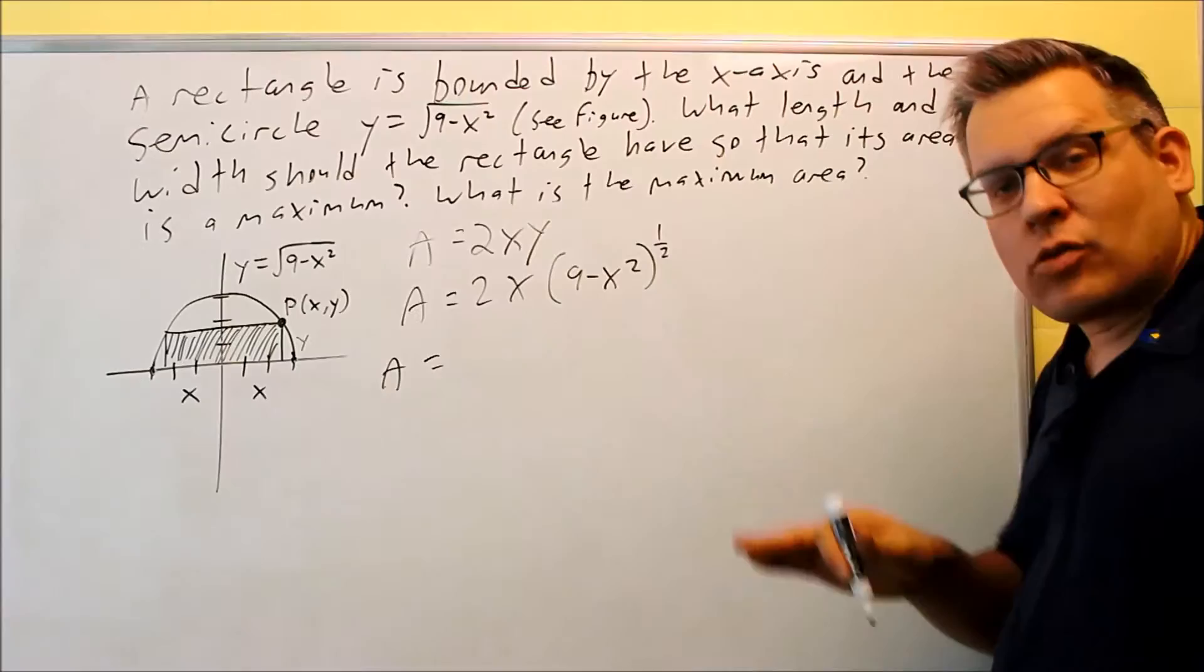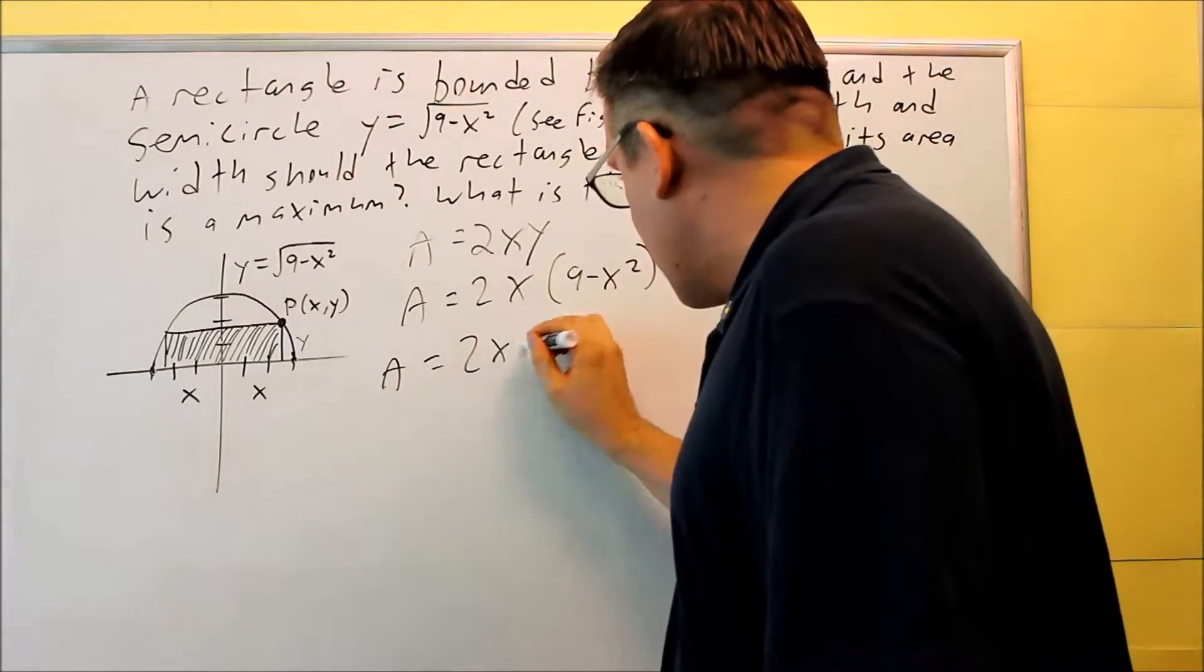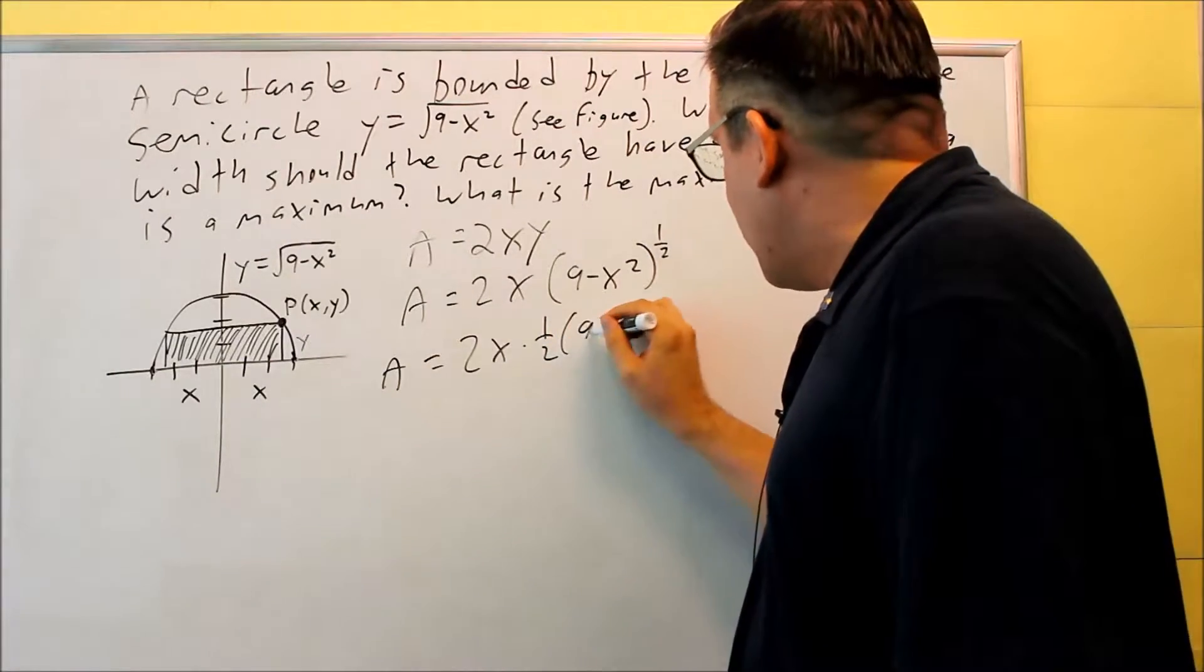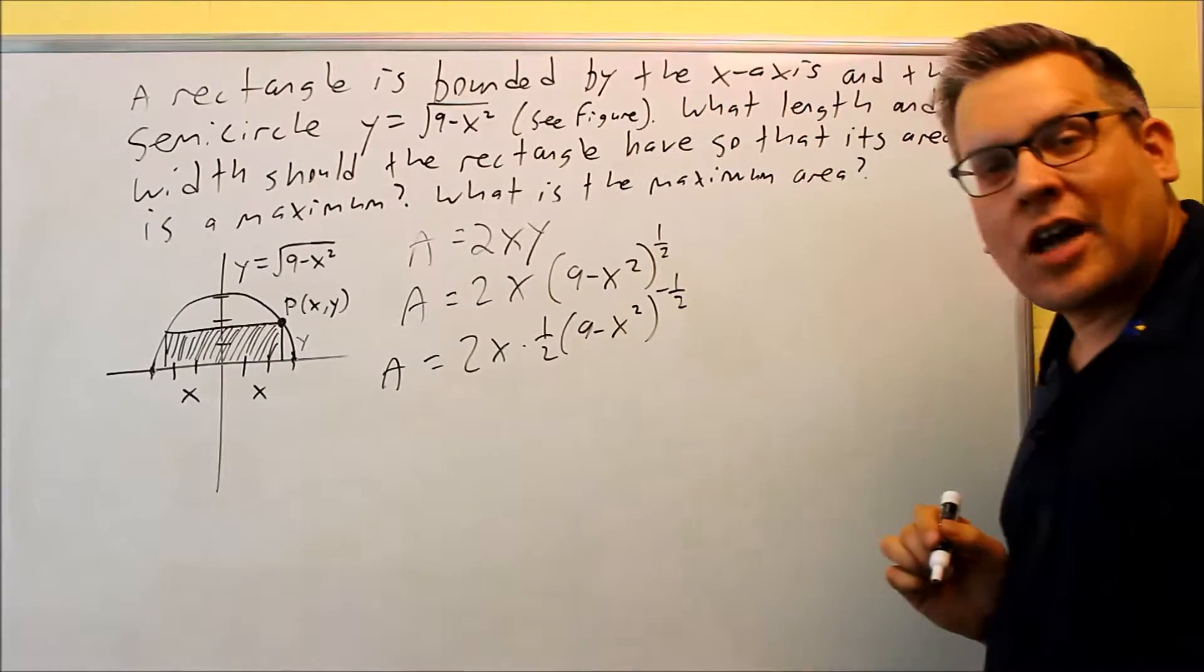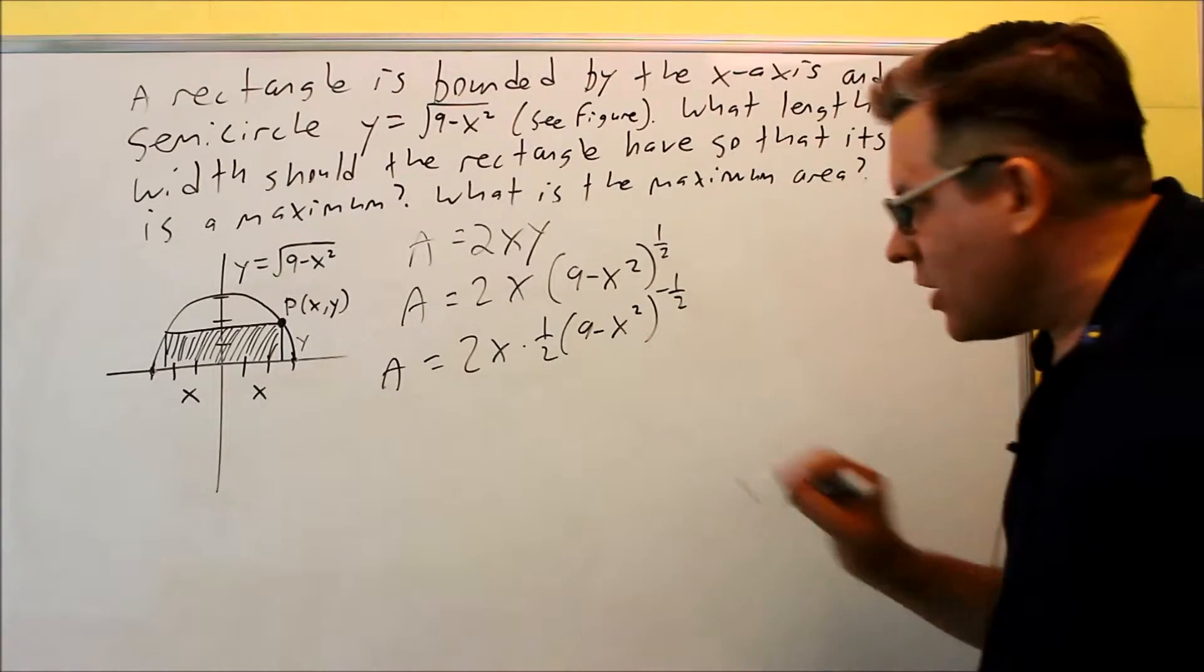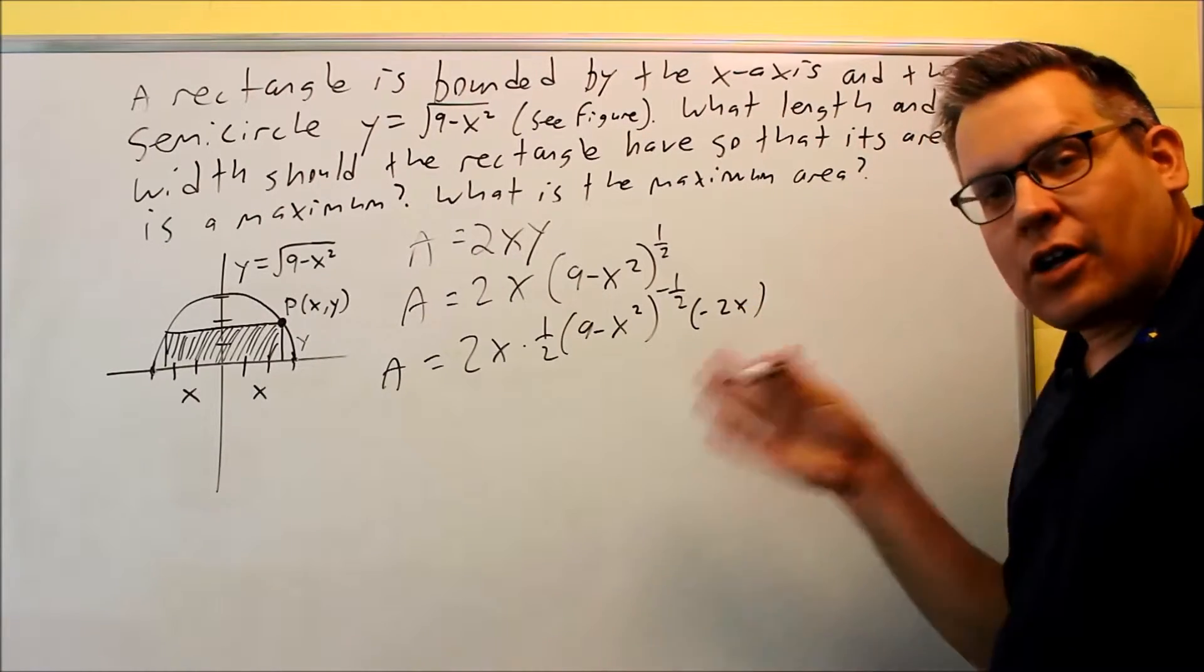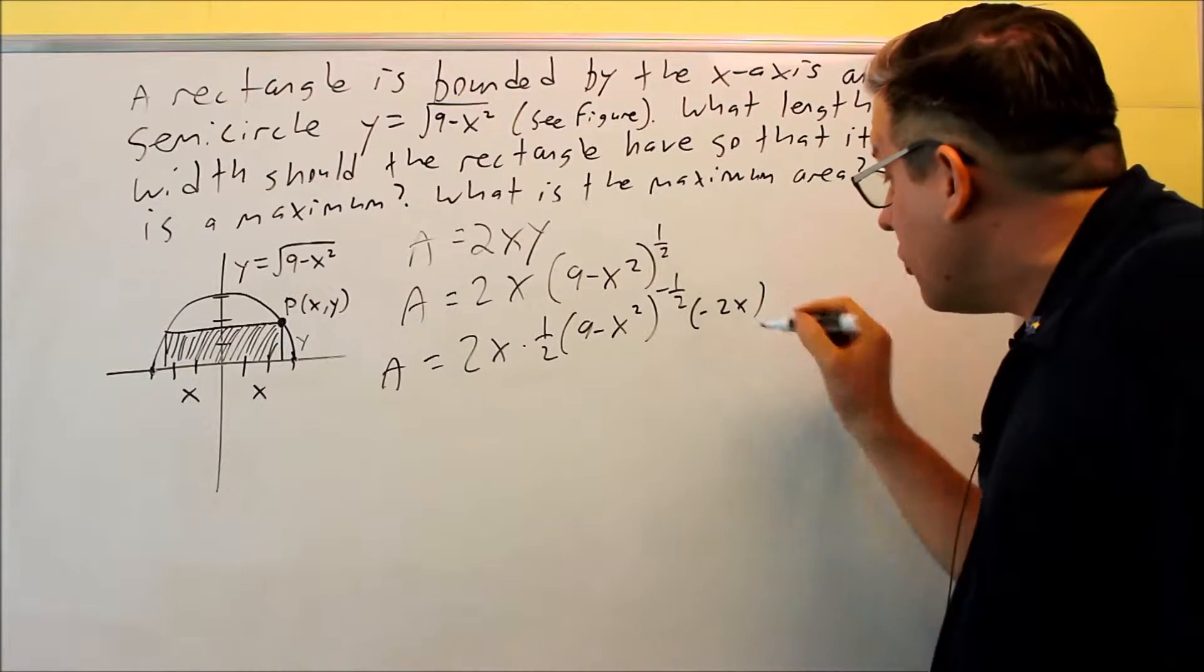Now this requires me to do a product rule combined with a chain rule. I have the first piece, 2x, times the derivative of the second. The derivative of the second, 1 half comes down, I have 9 minus x squared, subtract one from the exponent, and I get negative 1 half, but don't forget to do the derivative of the inside. If I do the derivative of the inside, I'm going to get a negative 2x. It's very important, if you don't do that inside part, you're not going to get the correct answer. So that part right there is crucial for this problem, remembering to do that step.